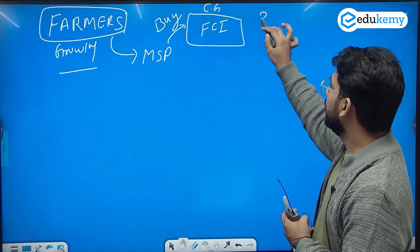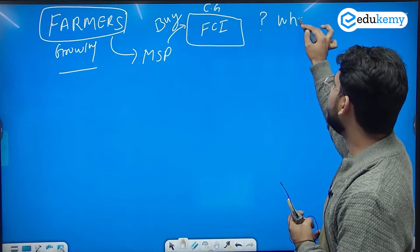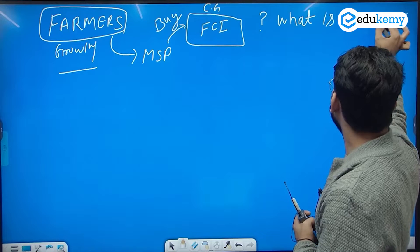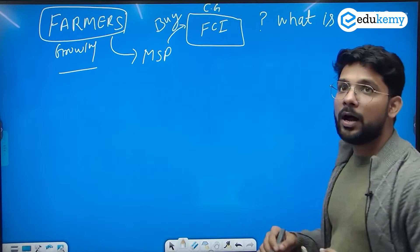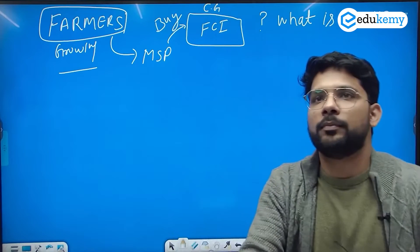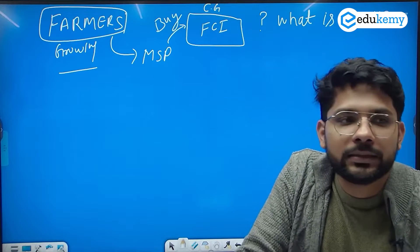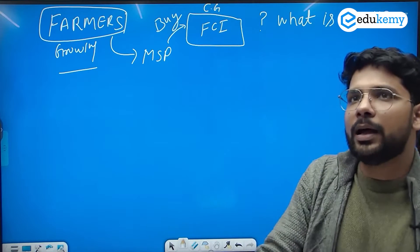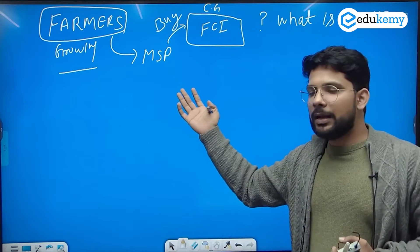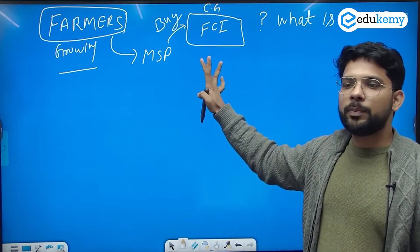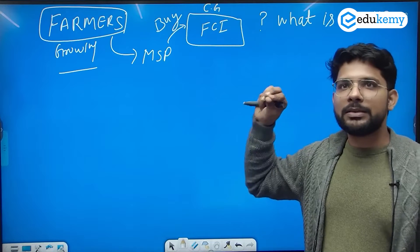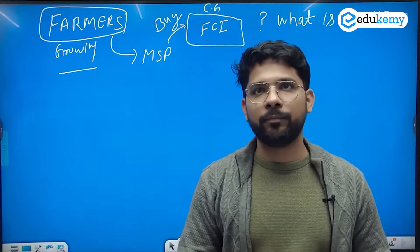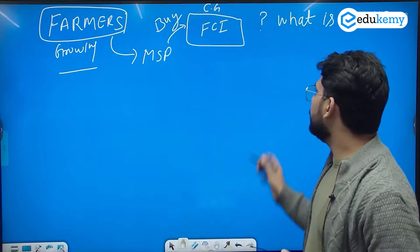Up to what limit can FCI buy? Is this unlimited procurement or is there some limit given by the government of India? Till now, this is unlimited procurement till the space is filled. But now the government introduced the grading system.